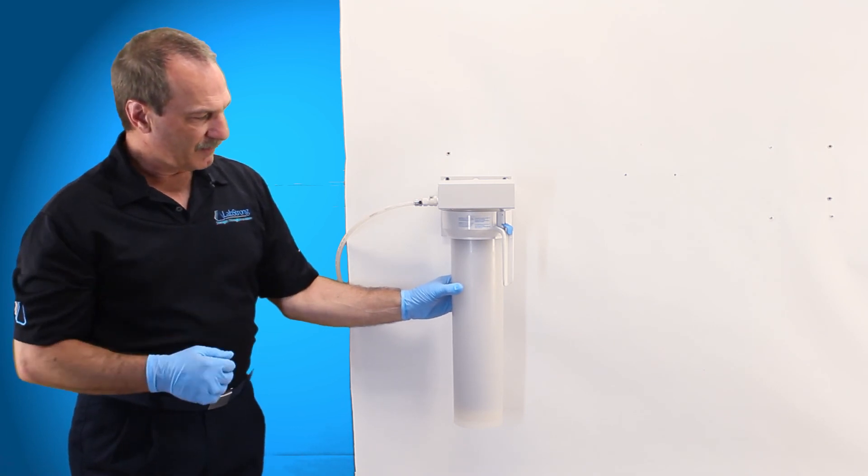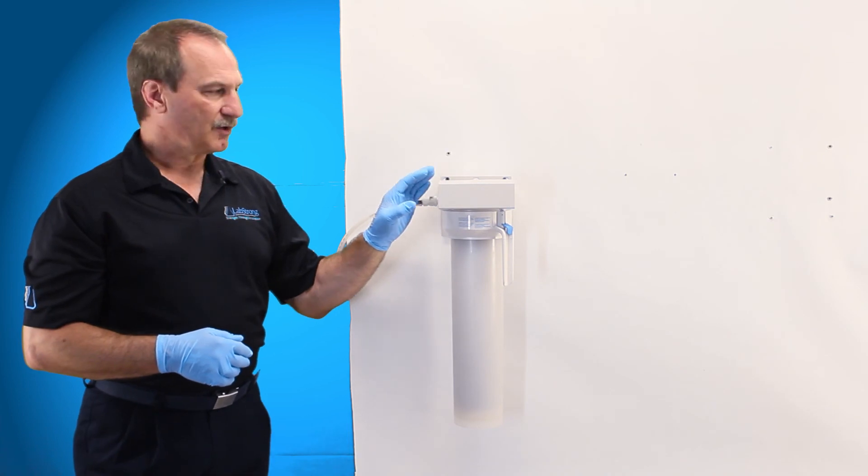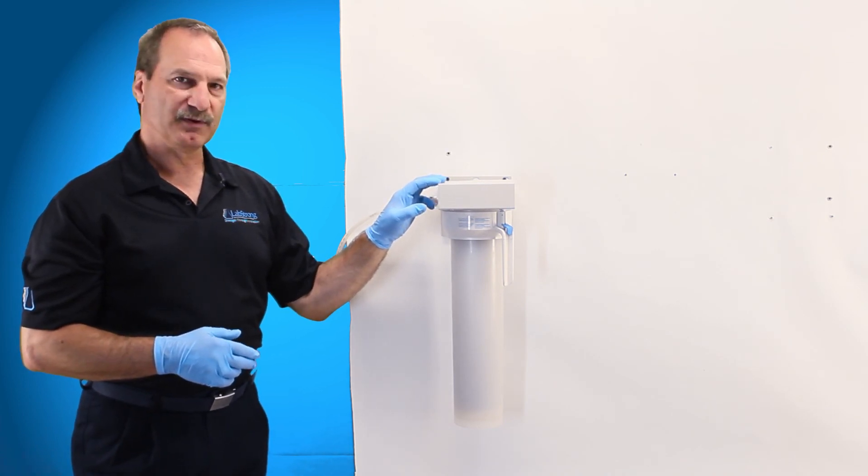Then you should be complete and that's how you install the LabStrong cartridge into a Barnstead B-Pure system. Thanks for watching. At LabStrong we are committed to making your lab life easier. For additional assistance please contact the experts at LabStrong.